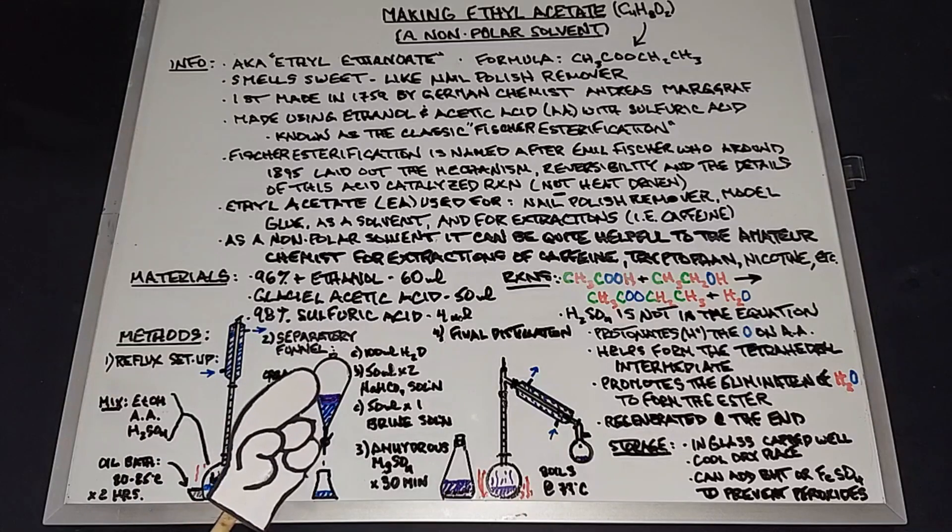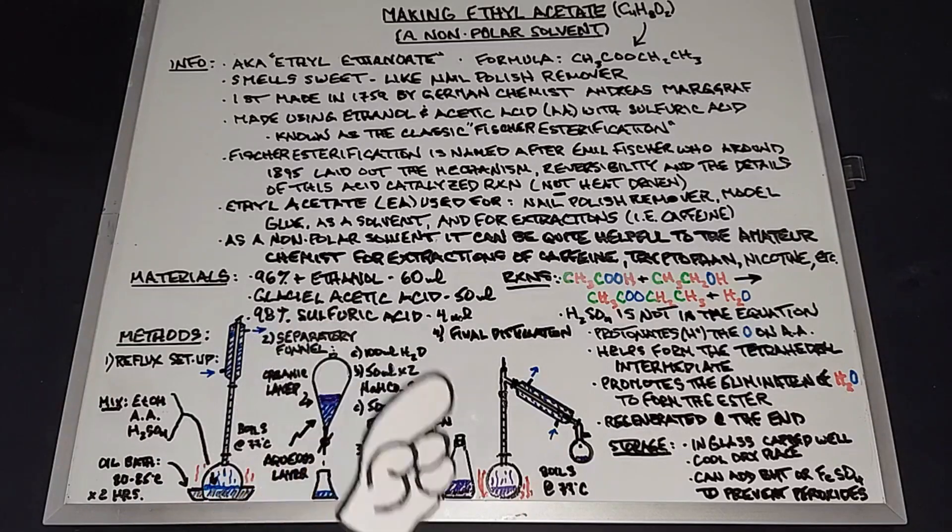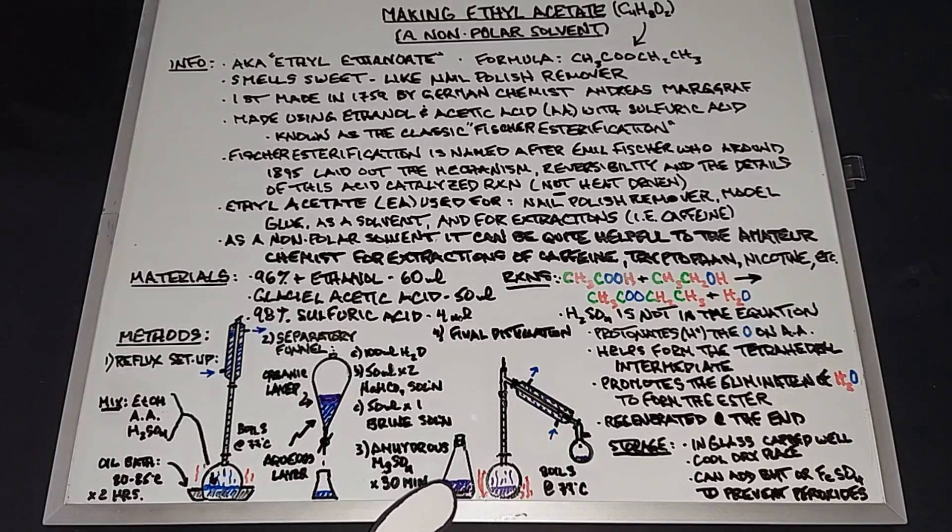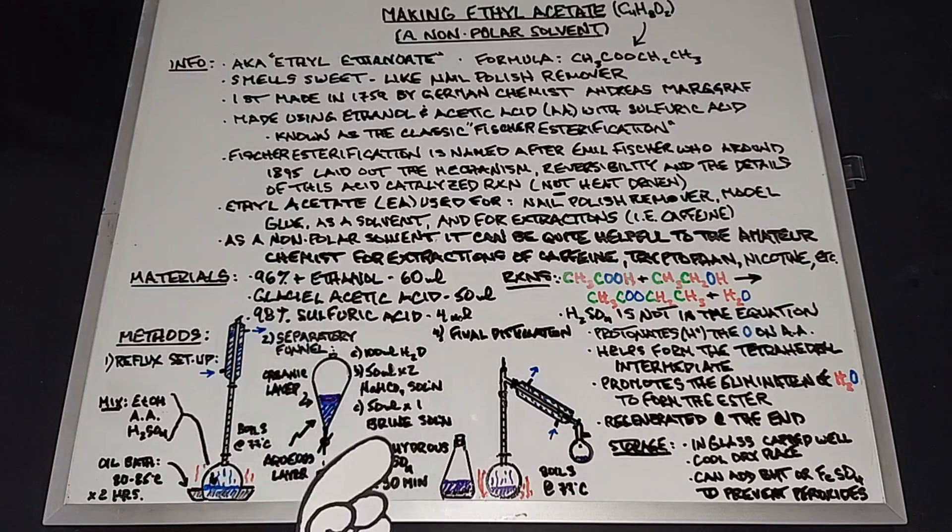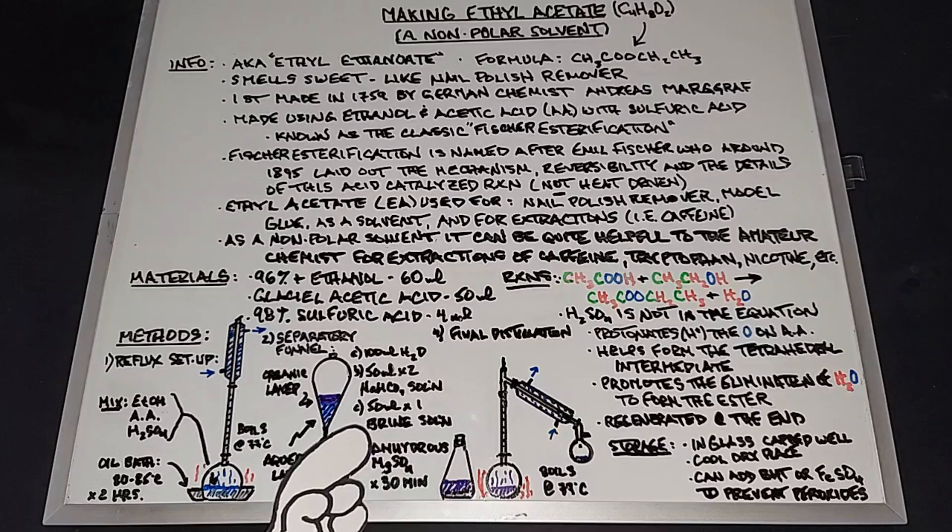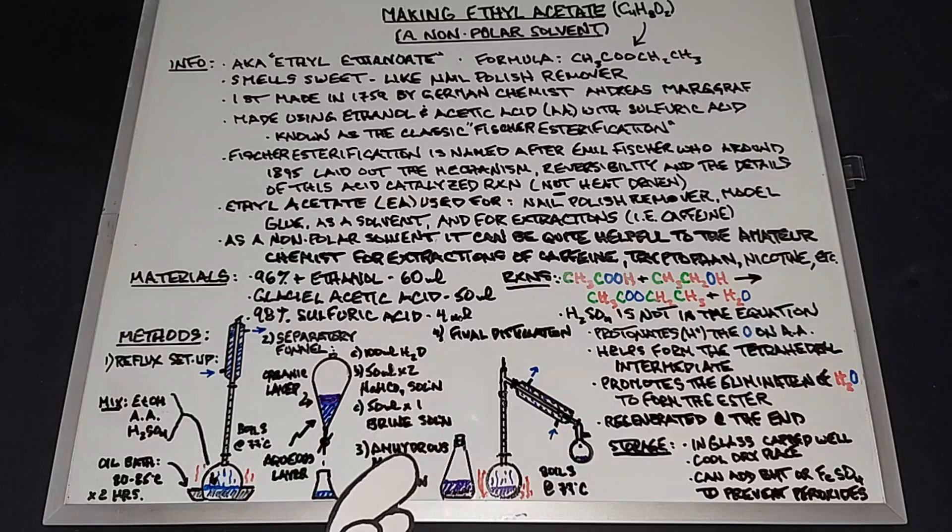We'll finally drain the organic layer into another container, which will be a flask. Inside this flask, we'll have the anhydrous magnesium sulfate, which works really well for this experiment. You can use calcium chloride, but anhydrous magnesium sulfate works a little bit better. We're going to leave it in there for 30 minutes capped, hopefully absorbing most, if not all of the last bits of water.